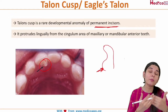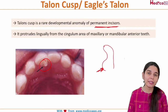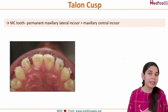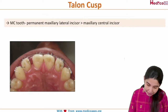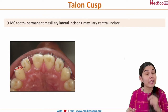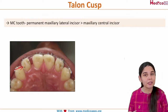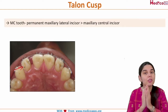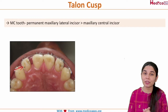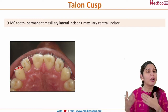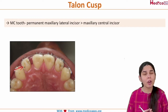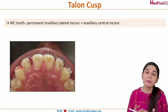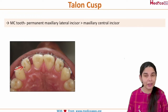Where is Talon's Cusp most commonly seen? It is most commonly seen in permanent maxillary lateral incisors, which is followed by the maxillary central incisor. So if an examiner asks where this rare anomaly is most commonly found, the answer is the permanent maxillary lateral incisor.